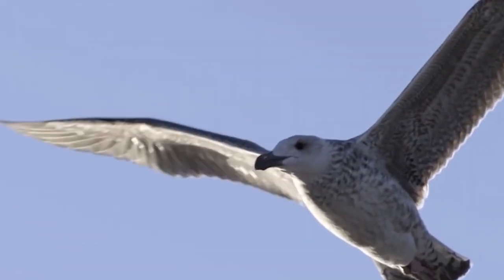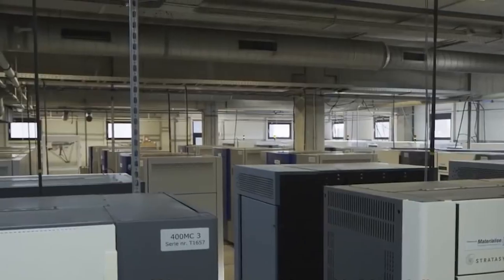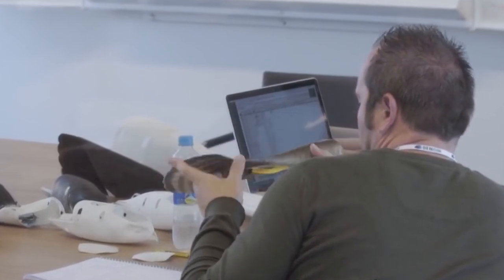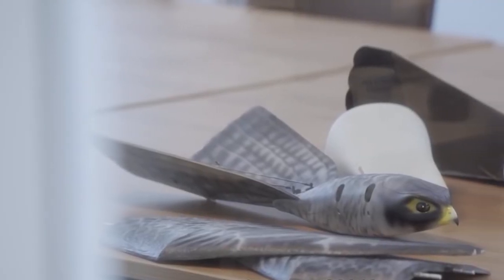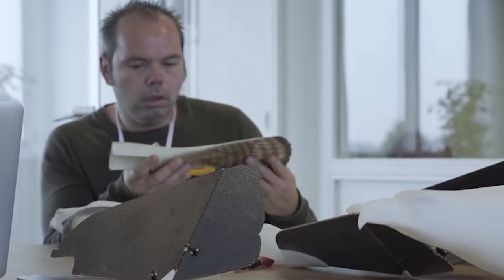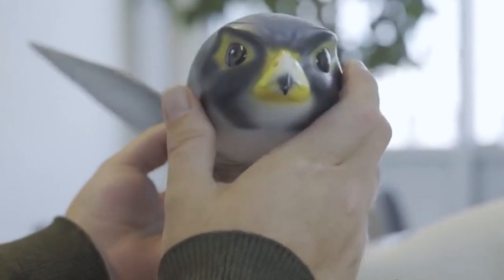Robo birds propel themselves by flapping their wings, with a flight performance comparable to real birds. These robo birds can be used at airports, orchards, fields, and waste sites to scare away the real and much peskier birds. They have developed two types of robo birds, the falcon, which can be used to chase off birds up to 3kg, and the eagle to chase away any type of bird.